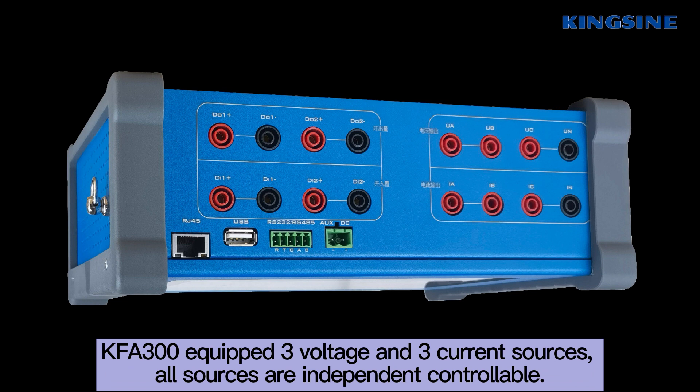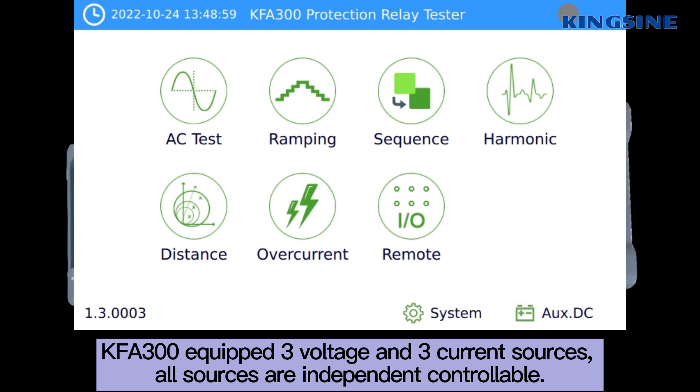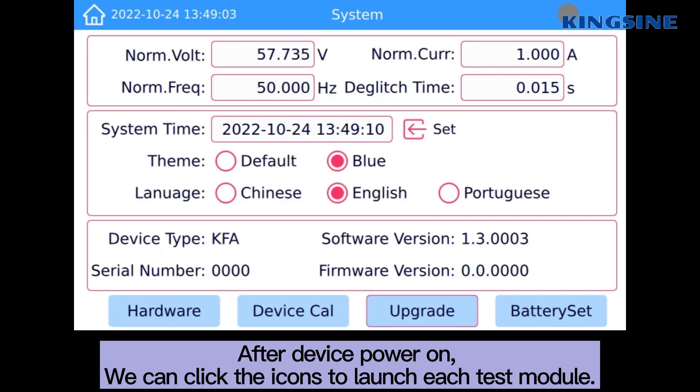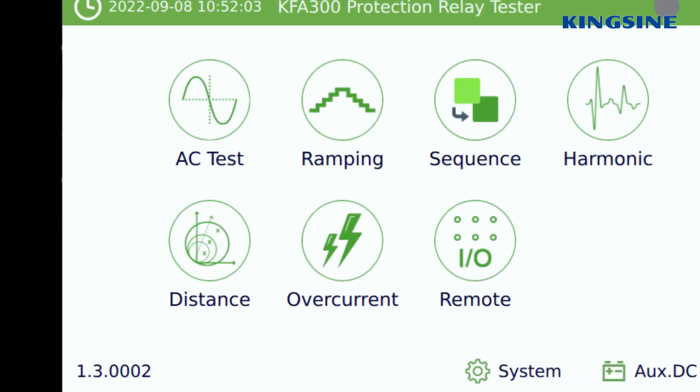KF300 is equipped with 3 voltage and 3 current sources. All sources are independently controllable. After the device powers on, we can click the icons to launch each test module.